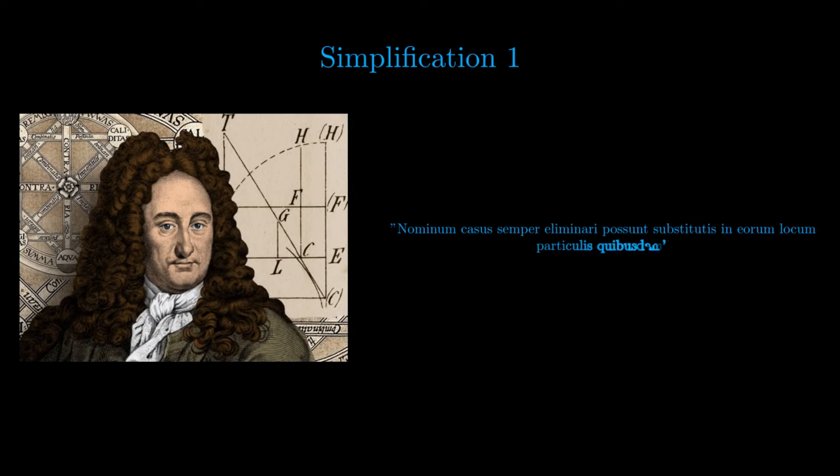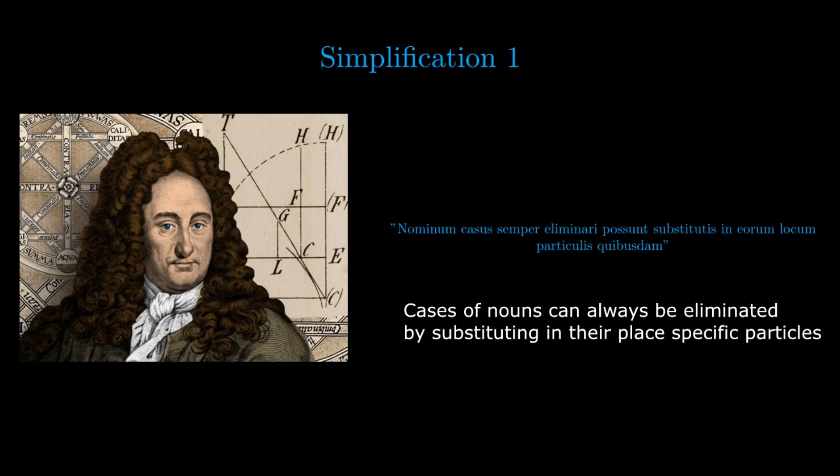The first simplification is case, and Peano includes a quote by Leibniz. Peano, in agreement with Leibniz, notices that the presence of cases—that is, inflections of the noun to specify the syntactic role of a noun in a proposition—are completely redundant. It is sufficient to use prepositions.